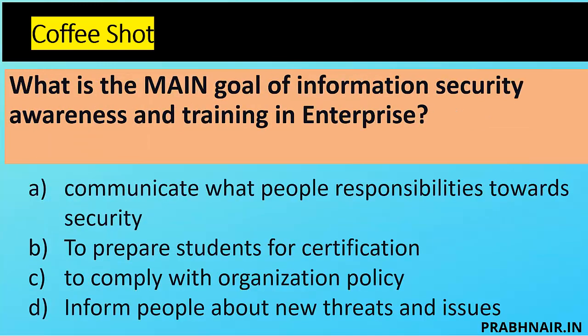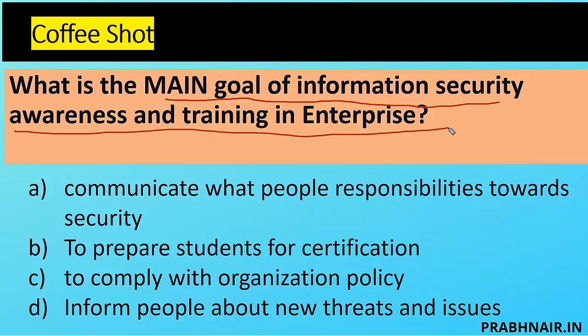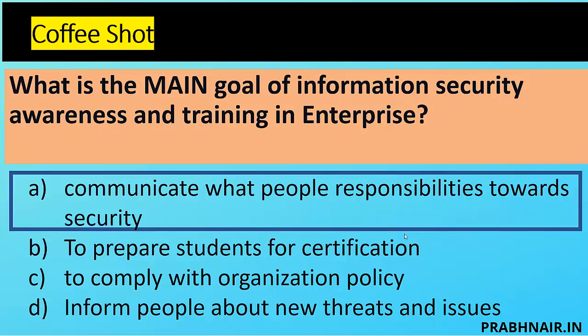Question: what is the main goal of information security awareness and training in the enterprise? When we conduct an awareness program, our objective is to make sure people know their responsibility toward security. Accountability lies with senior management, but responsibility lies with the people. Option A — communicate what people's responsibilities are toward security — makes sense. Preparing students for certification is not necessary for every training. Complying with policy is just obtaining a certificate. Informing people about new threats is true, but that is part of A.